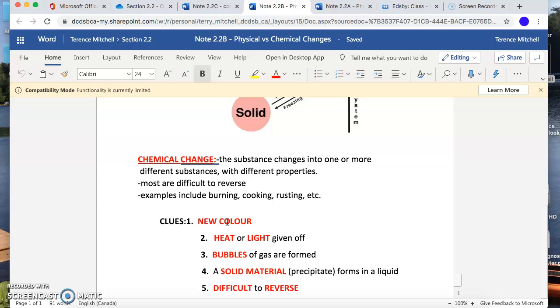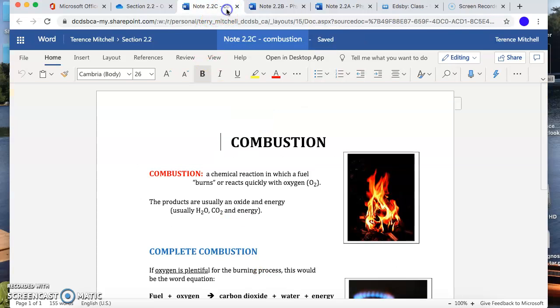Sometimes you can't always see what the new thing is. So when milk goes bad, when it sours, that's a chemical reaction. You might not notice new gas bubbles in it. You might not notice it's not giving off heat or light. You might not notice initially a new color. But you're gonna notice a new odor, and so that tells us that milk going bad is a chemical change.